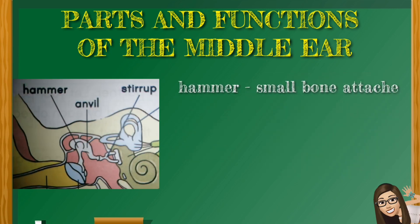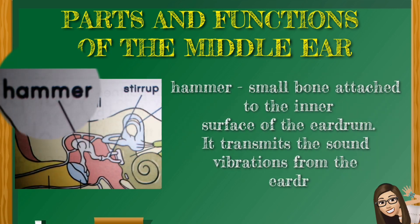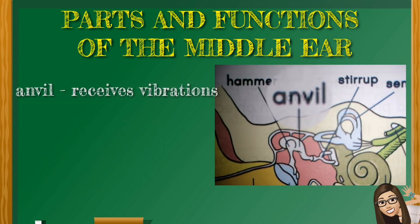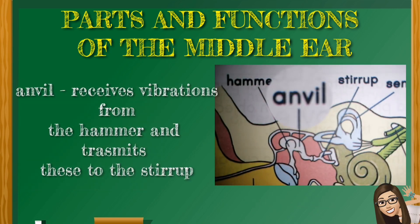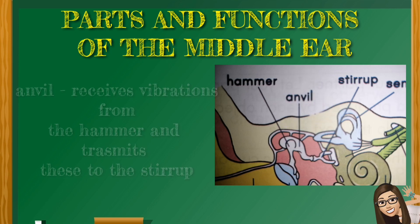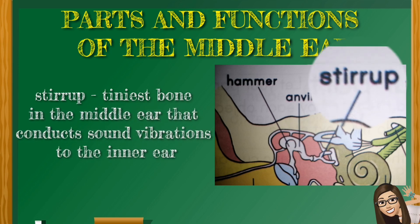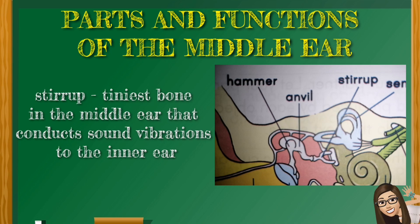The hammer is a small bone attached to the inner surface of the eardrum. It transmits the sound vibrations from the eardrum to the anvil. The anvil receives vibrations from the hammer and transmits these to the stirrup. The stirrup is the tiniest bone in the middle ear that conducts sound vibrations to the inner ear.